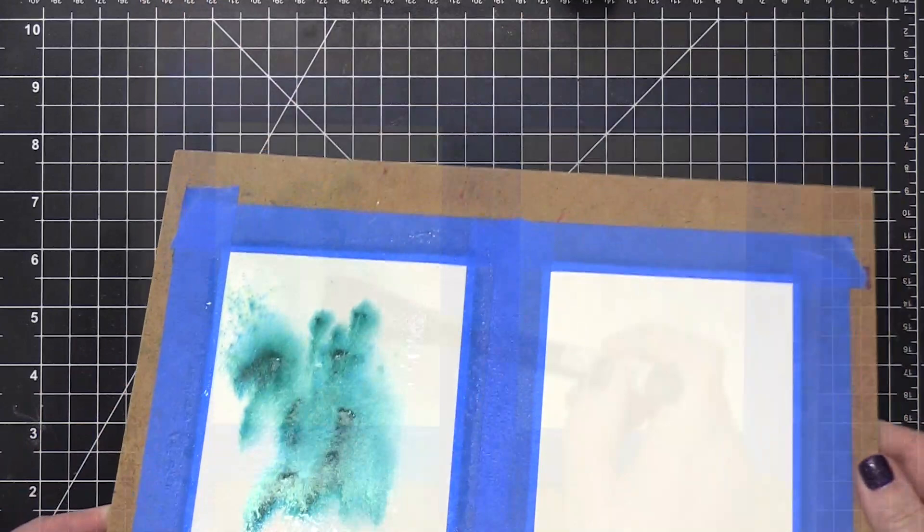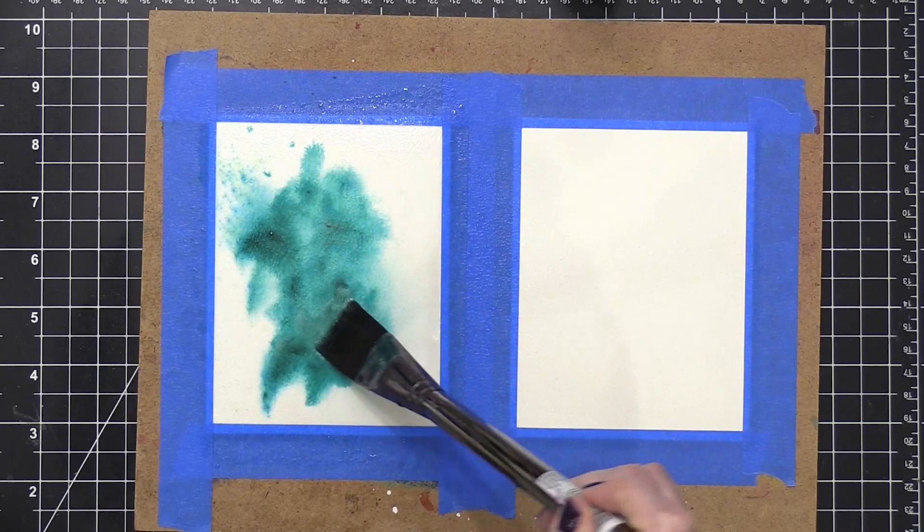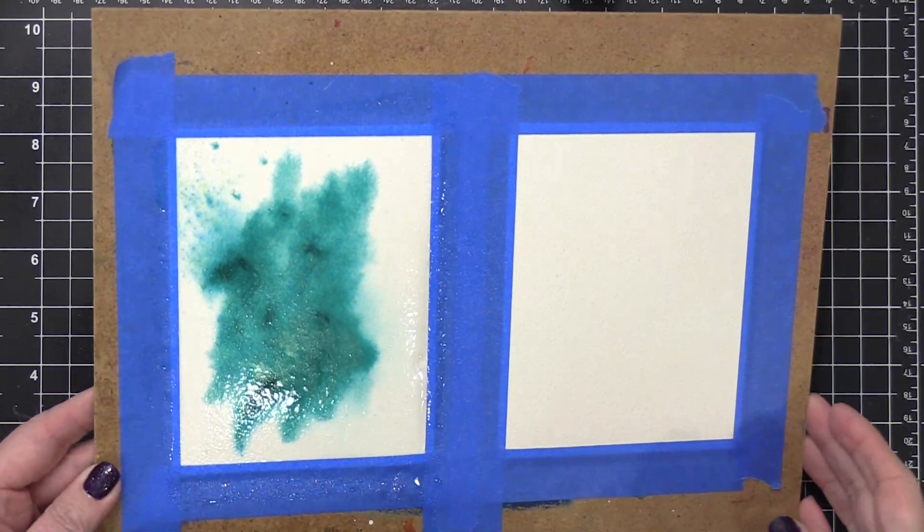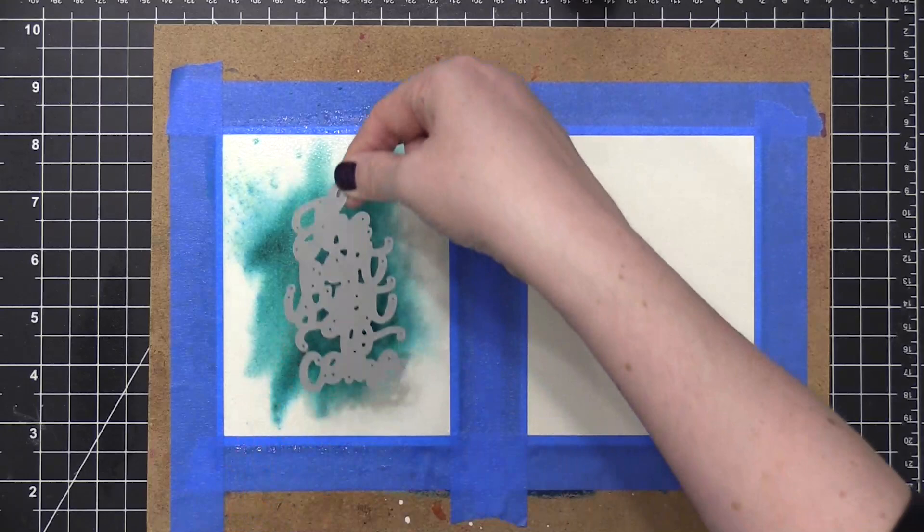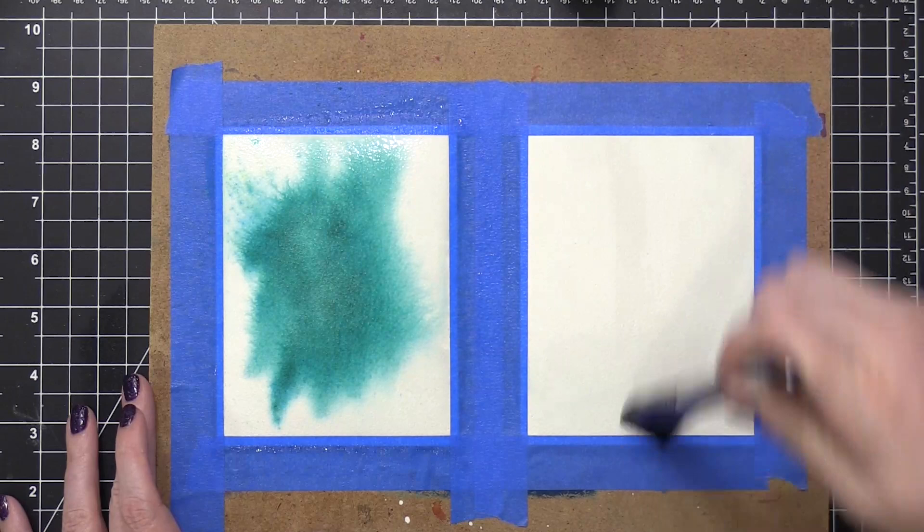So I'm spraying it with my Distress Sprayer bottle, just adding more water. And then some of the powders had really concentrated in some areas and I wanted them to move around. So I forced that with a paintbrush, just trying to get all of those colors to really move around. I'm gonna test to make sure that area's large enough for my die. And then I moved on to the other background.